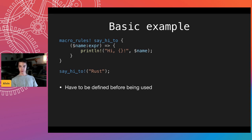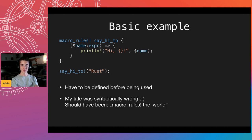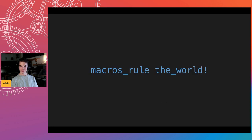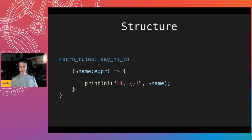Macros have to be defined before being used. You can have recursive macros — that works, because when calling, they're already defined. You can even define a macro below and call it within another macro defined above it, as long as it's defined when that macro gets inserted. And I have to apologize for my title — it should have been "syntactically, macro_rules the world" since the `macro_rules!` syntax makes "macros rule the world" literally true in Rust.